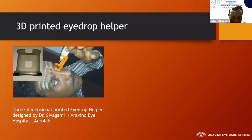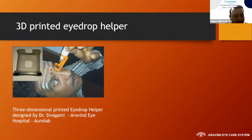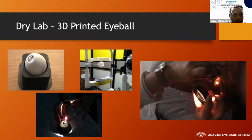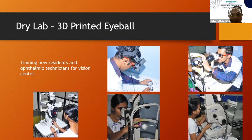Let us see what we have done with 3D printing in our ophthalmology hospital. We have 3D printed an eye dropper which can be used by patients who struggle to put drops in the eye — it is a simple model that allows drops to fall exactly into the eye. We have also 3D printed an eyeball model that can be used for practicing direct ophthalmoscopy, indirect ophthalmoscopy, and indentation. All residents and ophthalmic technicians practice on this model before working with patients.